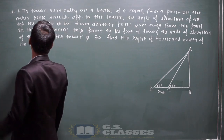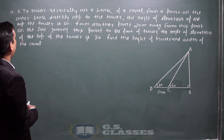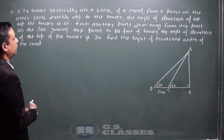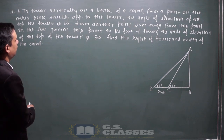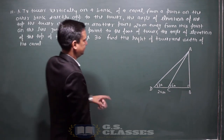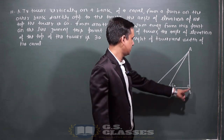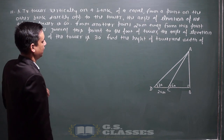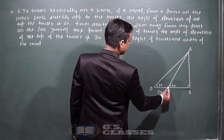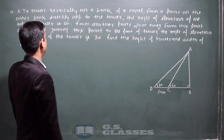I pass a TV tower vertically on a bank of a canal, from a point on the other bank directly opposite to the tower. The angle of elevation of the top of the tower is 60 degrees. This is a tower, this is a canal, and in this canal there are two points. One point is C, from which the angle of elevation of the top of the tower is 60 degrees.